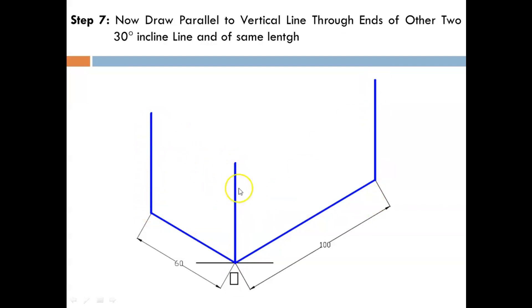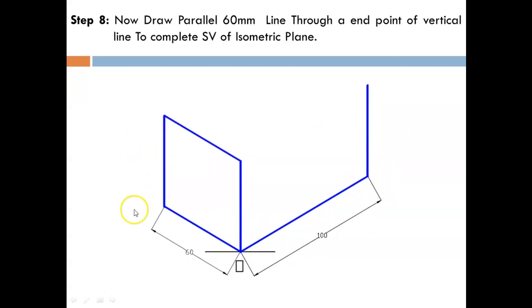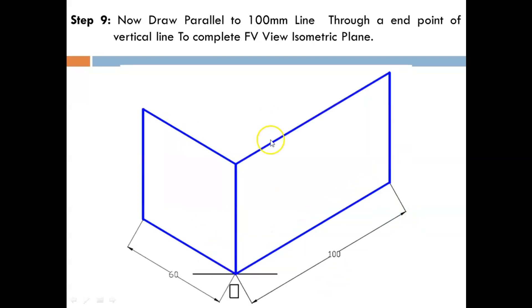One from here and one from here. This line has the same length—60, 60, and 60. After this, draw parallel to the 60 mm through the ends of the vertical line, or you can simply connect the end points. Make sure this is parallel with the base line. Similarly, draw the 100 mm parallel line through the end points of the vertical line, but cross-check whether this line is parallel to this.